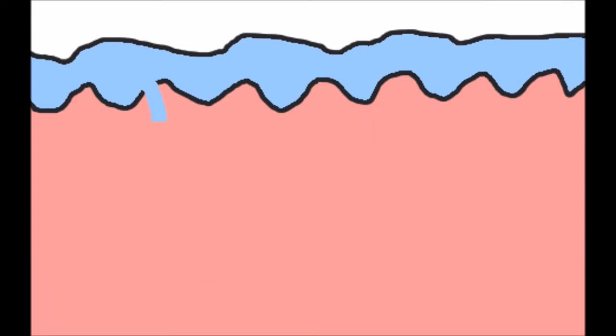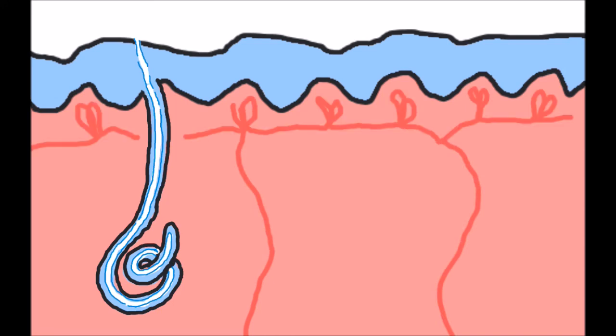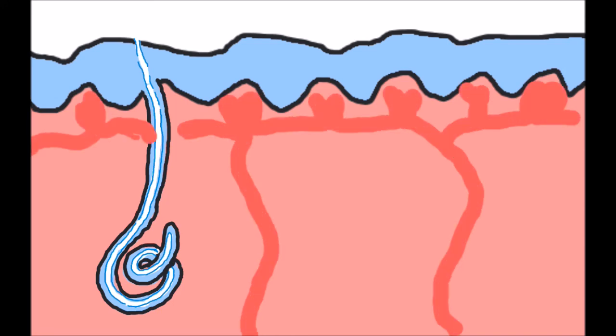Sweat glands are also an extension of the epidermis. They can discharge fluids to the surface of the skin which help cool the body. Aiding in this, nearby papillary blood vessels can dilate to bring more blood close to the surface to help radiate heat away from the body.